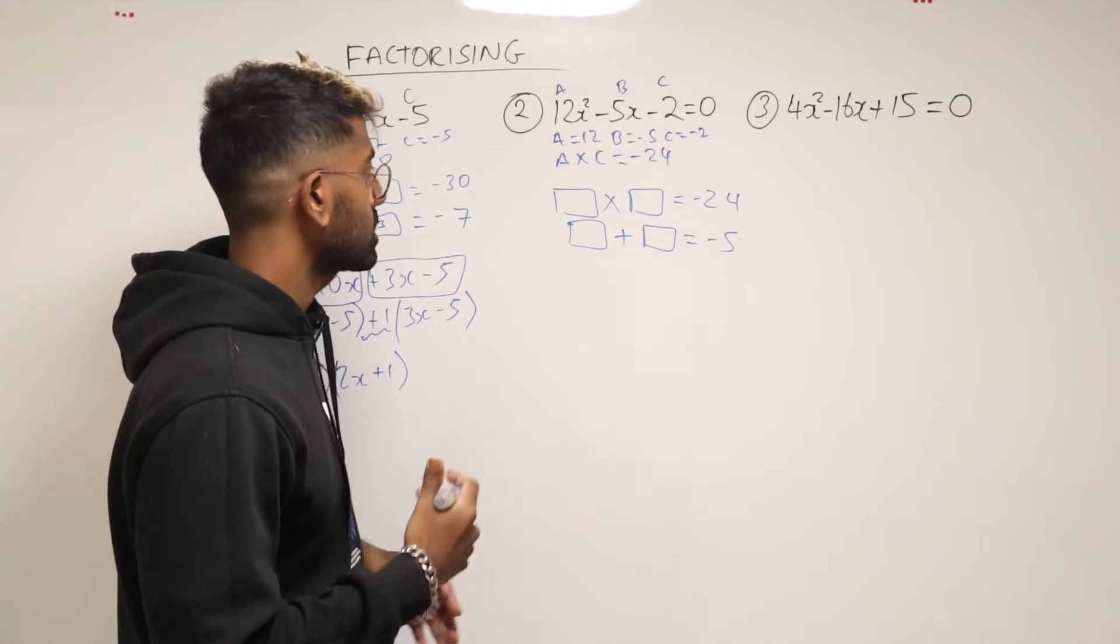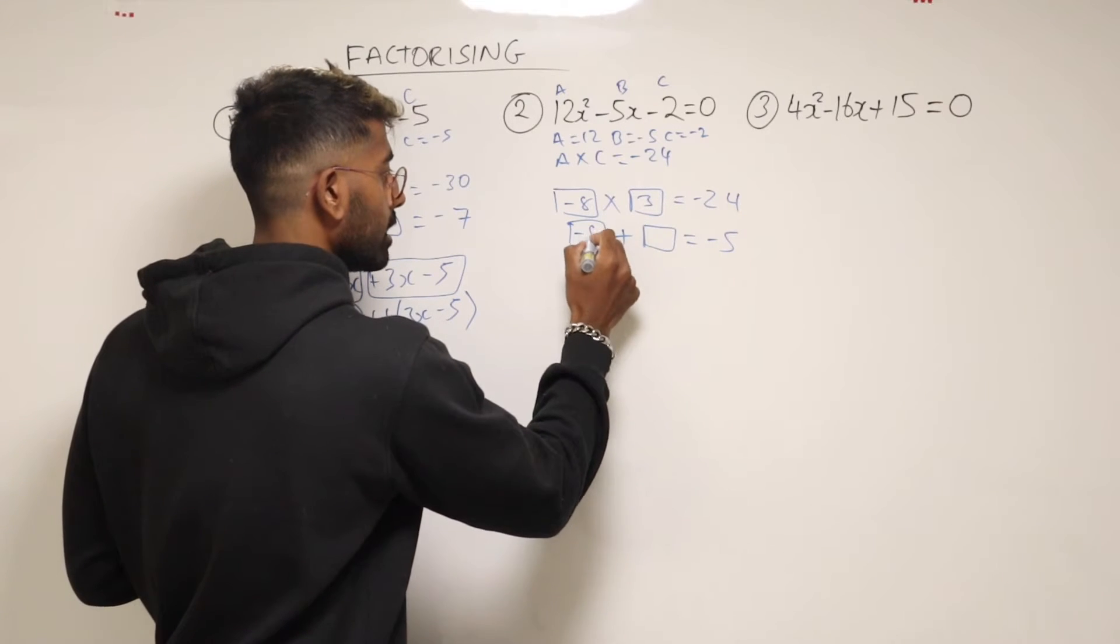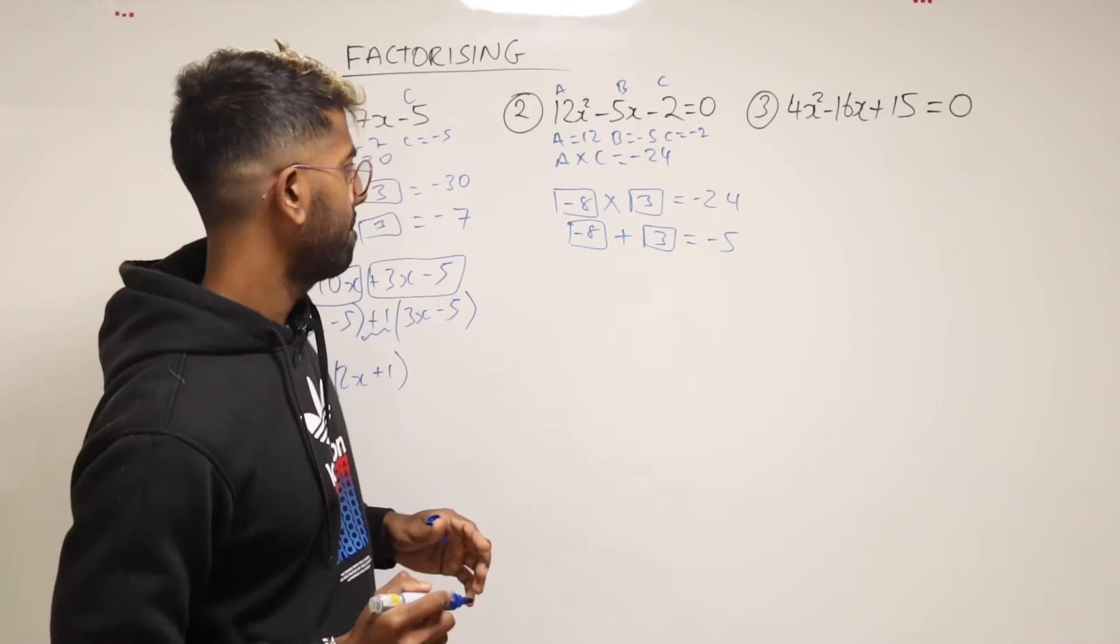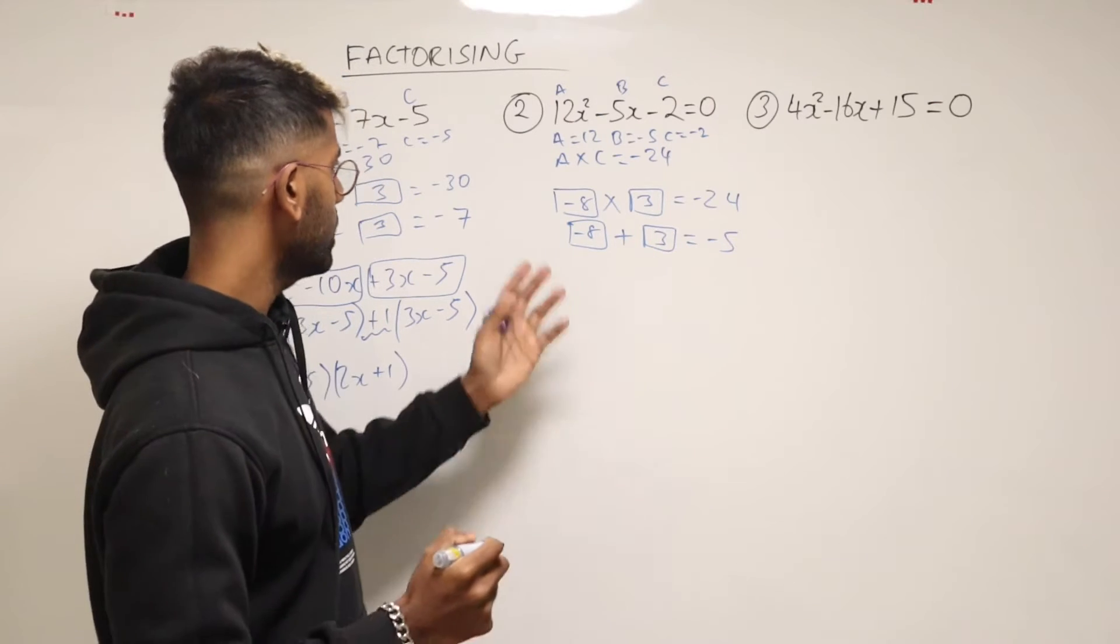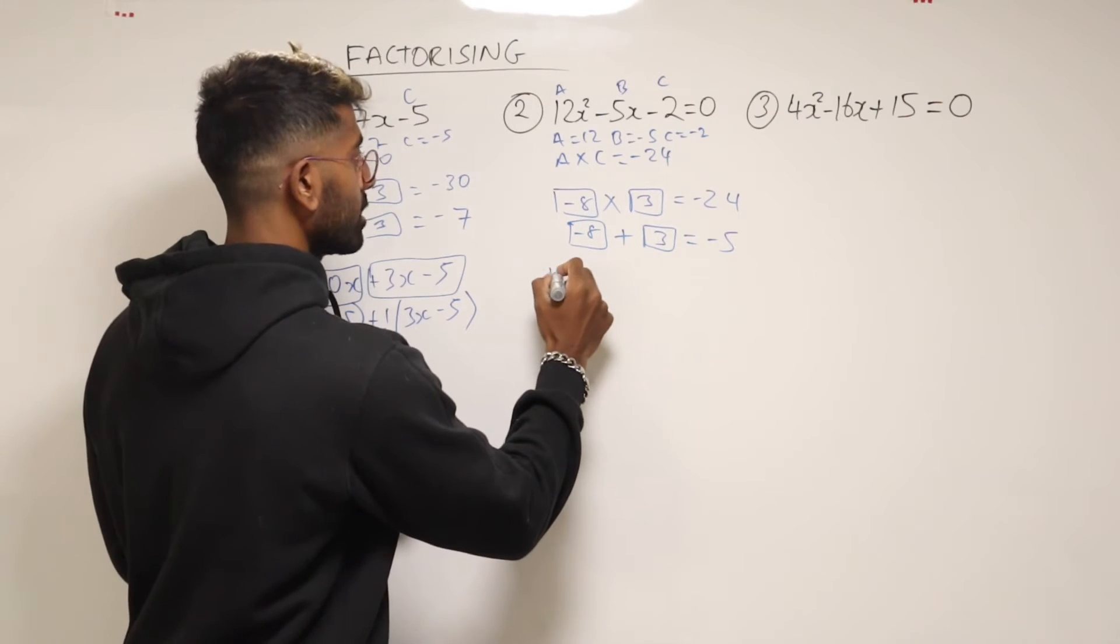So this time is going to be, I think, minus 8 and 3. Minus 8 plus 3 is minus 5. Okay, that's good. And now we rewrite the quadratic.